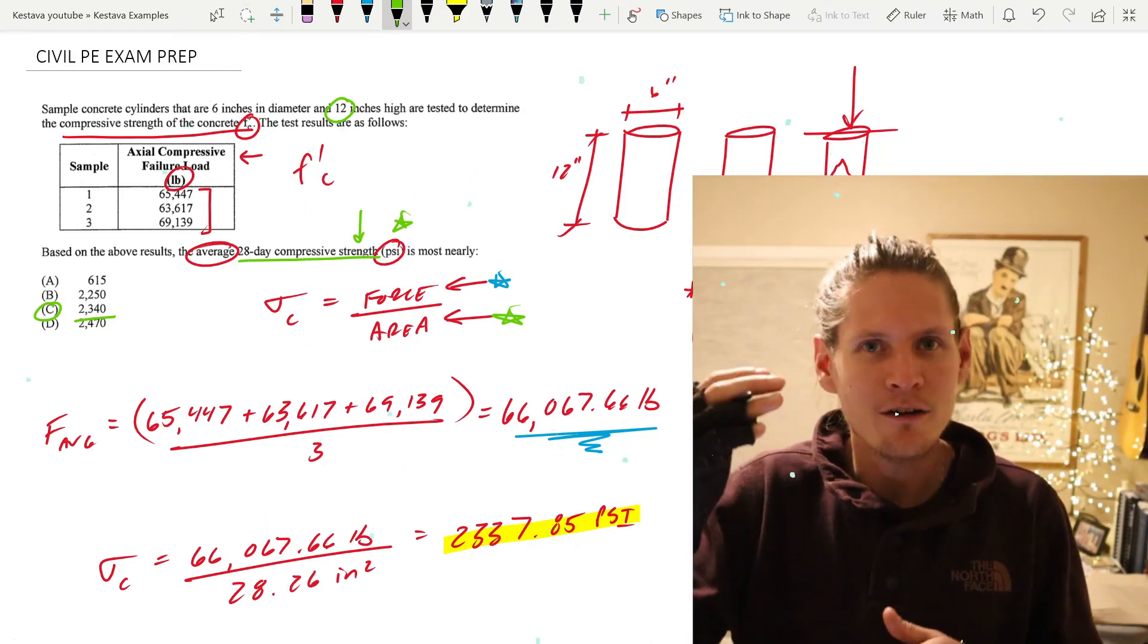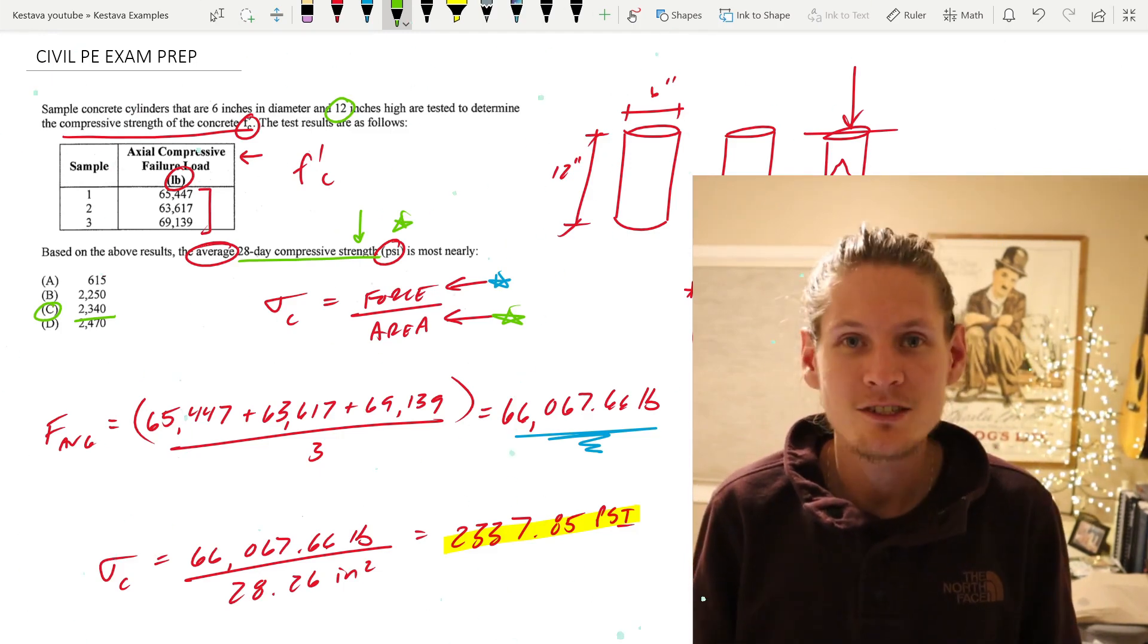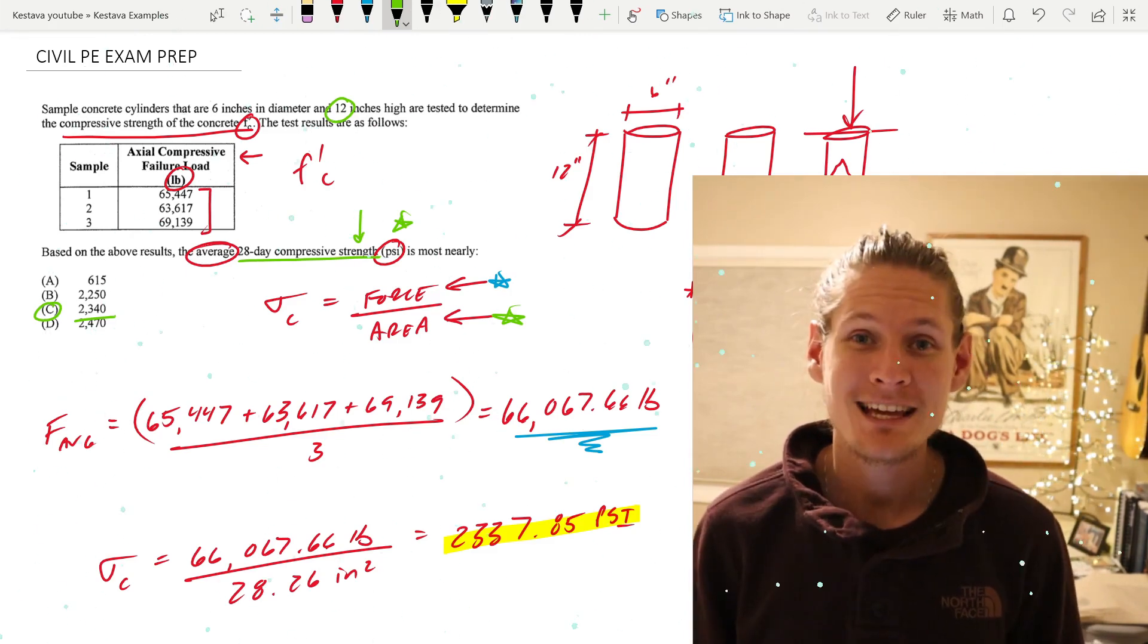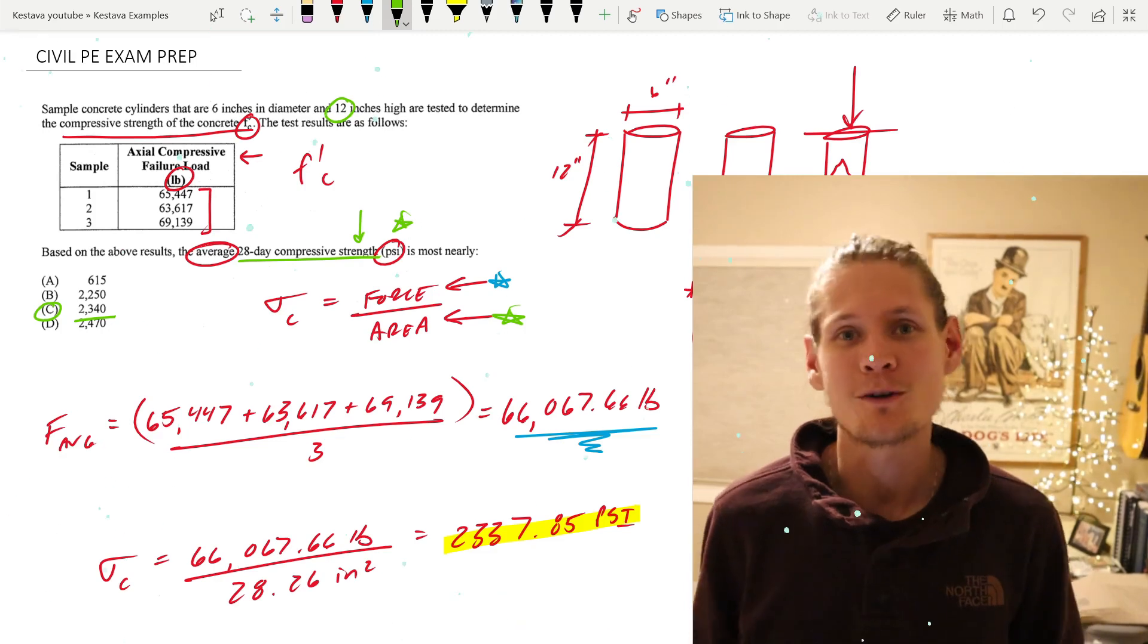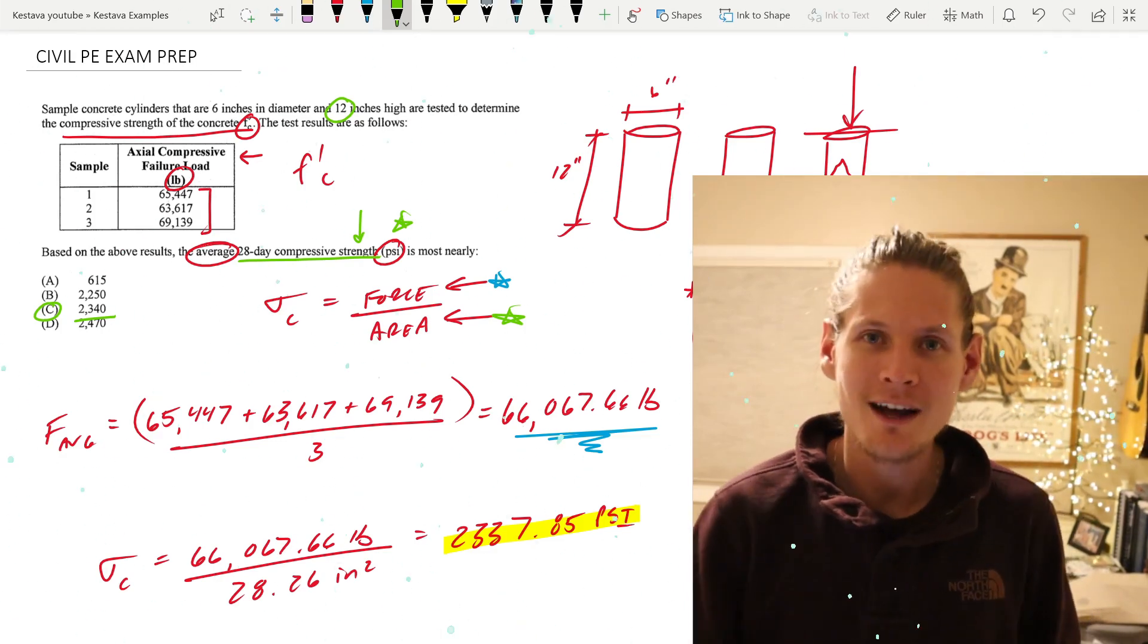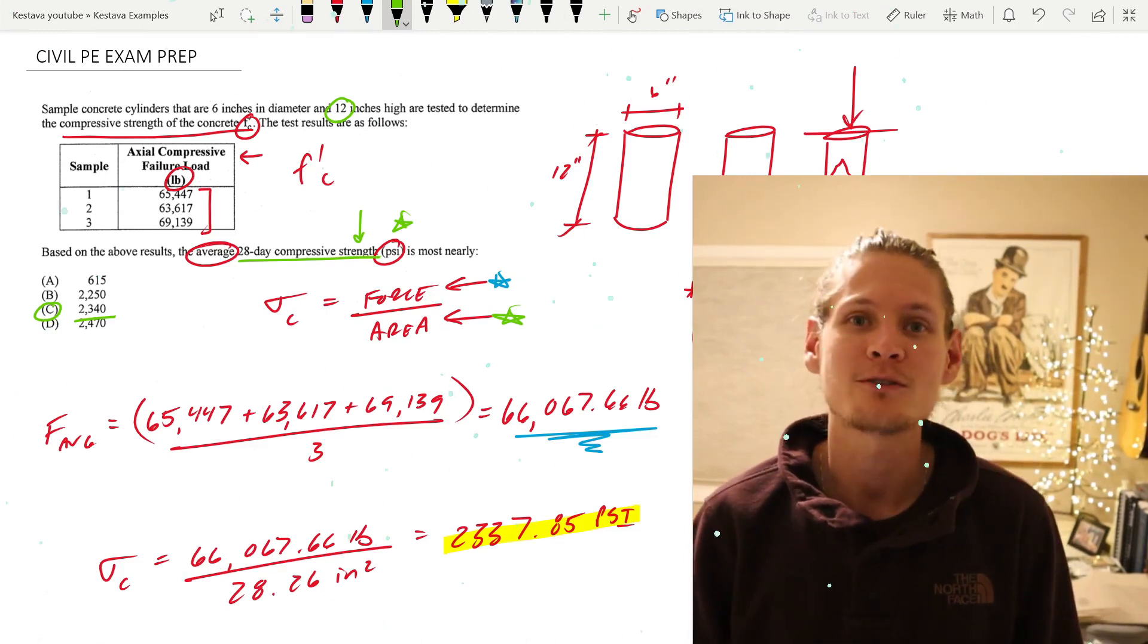In this case, the 12 inches, the height of those cylinders, we never needed that. We never used it. You don't need to use everything they give you at all times, so don't panic if that happens. And number three, this was a quick and easy example today and they don't always need to be difficult. Like I said at the beginning, that's another big one. Feel confident when you knock out those easy ones and understand that yes, you absolutely got that one right.